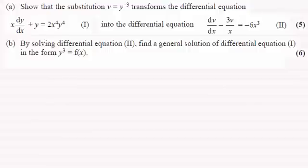Okay welcome back then if you had a go. So first of all what I'm going to do is just copy down what we've got here for equation two and that is that we're given dv by dx minus 3v over x equals minus 6x cubed.